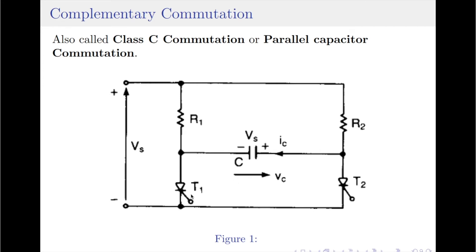Since thyristor T1 is connected to the capacitor C with its anode connected to the negative plate and the cathode connected to the positive plate, thyristor T1 is reversed and turned off because of impulse commutation. Once thyristor T1 is turned off, the capacitor voltage is reversed to a value of minus Vs through resistance R1, T2 and supply. Therefore, the polarities of the capacitor plates will be reversed. If thyristor T1 is now fired, the capacitor voltage will fall negatively across the anode-to-cathode terminals of thyristor T2 and it is turned off — in the same way thyristor T1 had turned off. In this way, the cycle is simply repeated.